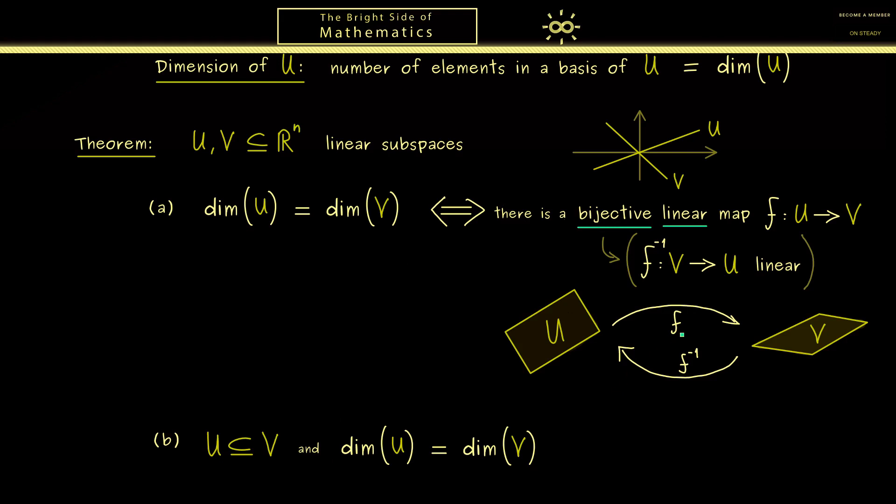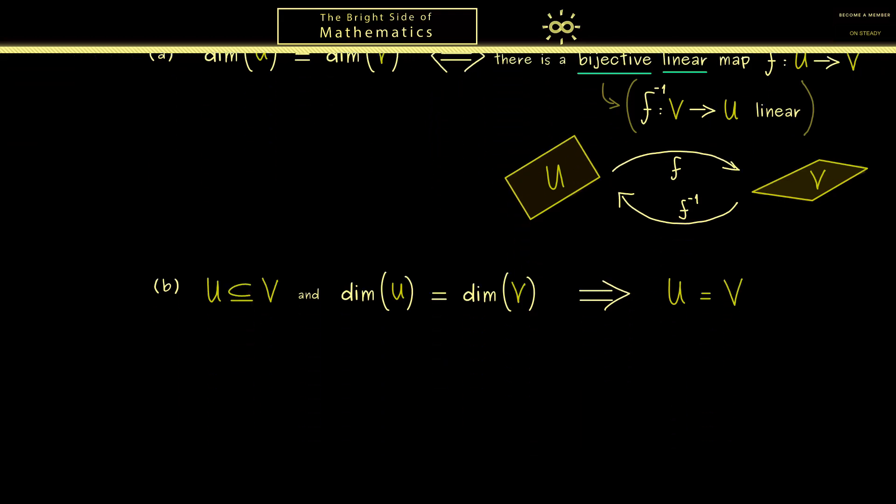And therefore there is no other possibility that U and V are actually the same subspace. Or to say it in other words, if you want a proper subset you need less in the dimension. Ok so now we have both facts here and I would say they are very important so please remember them for the future. Moreover in order to understand these claims here I would say let's prove them.